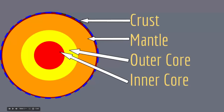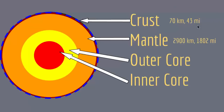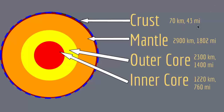The mantle is below the crust and has a very large volume — it's actually the largest layer. After that comes the outer core and the inner core. The crust is about 70 kilometers thick, equivalent to 43 miles. The mantle is about 2900 kilometers thick. The outer core is about 2300 kilometers thick, and the inner core is about 1220 kilometers thick.